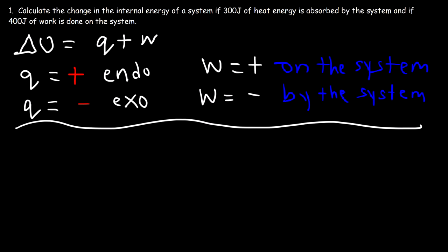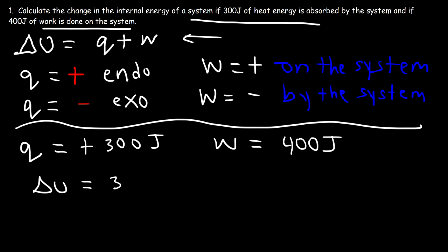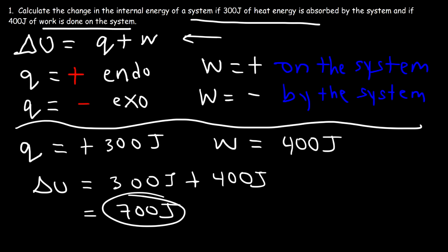Now let's get back to this problem. What is the value of Q and what is the value of W? The system absorbs 300 joules of heat energy, so Q is positive. Work is done on the system, so W is positive 400 joules. Using delta U = Q + W, we have 300 plus 400, so both events work to increase the internal energy of the system. The change in internal energy is 700 joules.